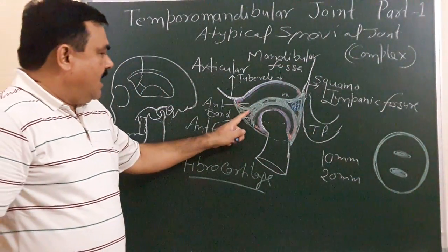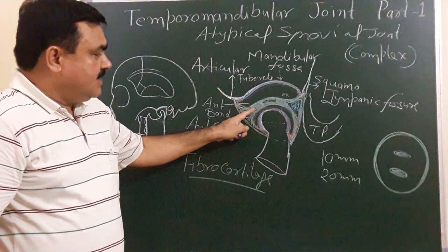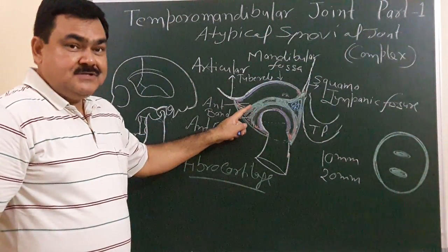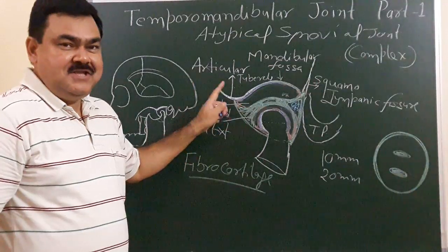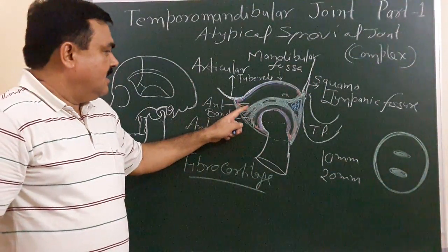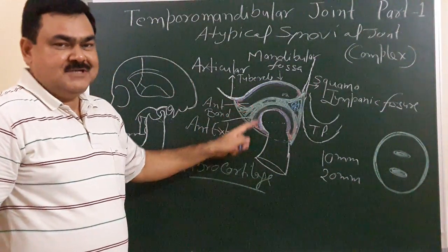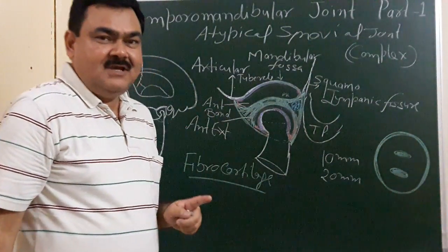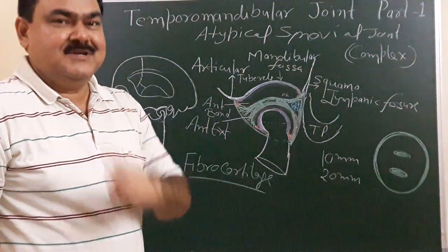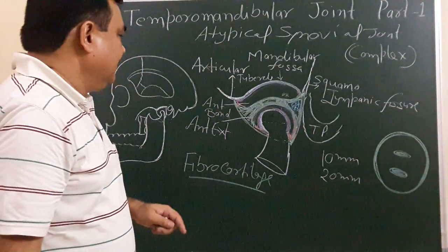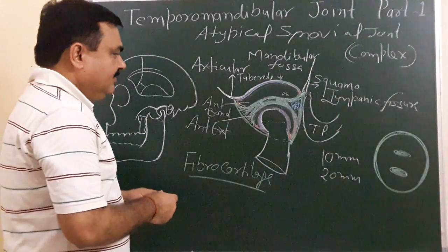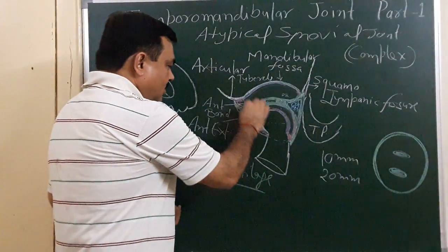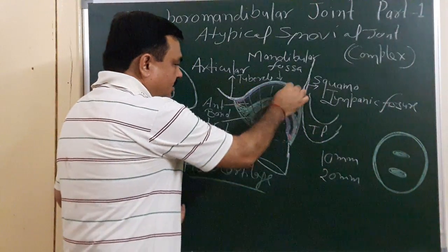Another important point: this articular disc is the morphologically degenerated part of the lateral pterygoid muscle.